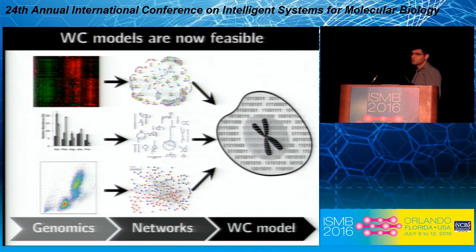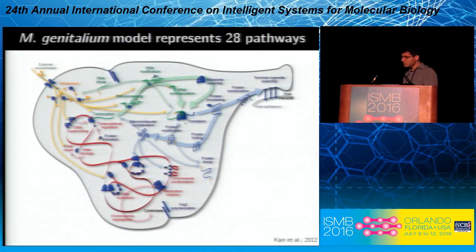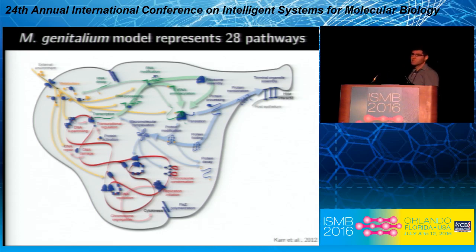The last major advance enabling wholesale modeling is new technologies for combining multiple networks or multiple dynamical models of individual pathways and merging them together into a single model. We've used this combination of approaches — combining genomics, bioinformatics, and dynamical modeling — to develop one of the first wholesale models of mycoplasma genitalium, a small gram-positive bacterium that contains just 525 genes.